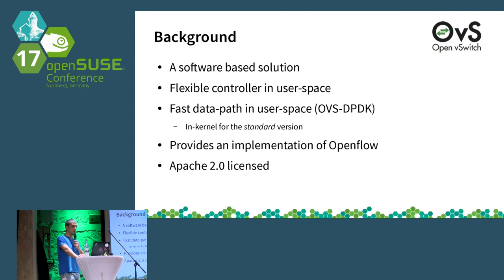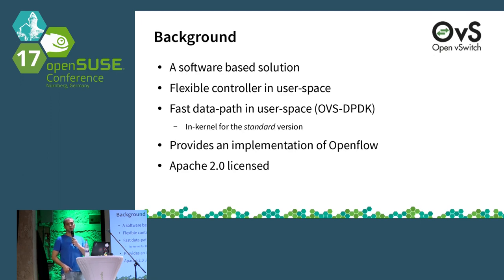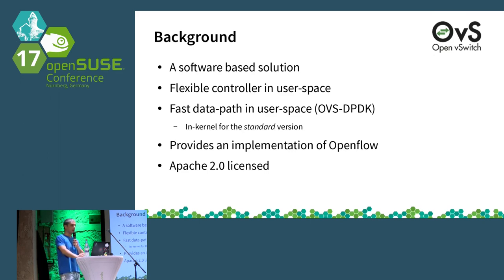What is Open vSwitch, abbreviated OVS? It's a software-based vSwitch offering a flexible controller in user space where a daemon runs, and you have tools to instruct the switch with specific flows. It has a fast data path in user space when using OVS-DPDK — in standard OVS that data path is in the kernel. It provides an implementation of OpenFlow, so you can use OpenFlow to configure your virtual switch. And it's based on the Apache 2 license.